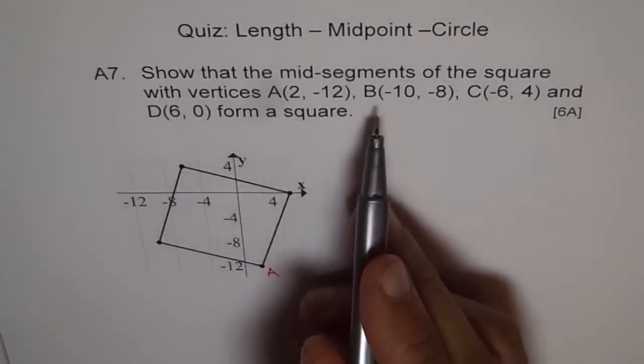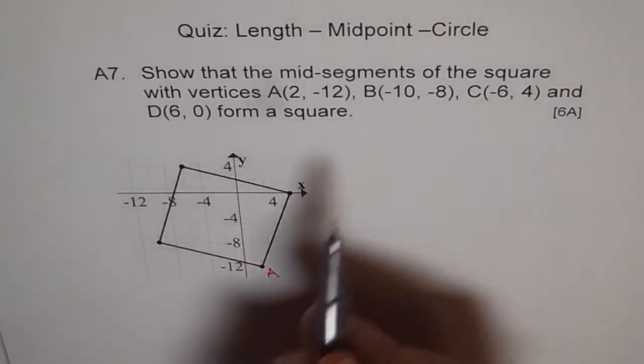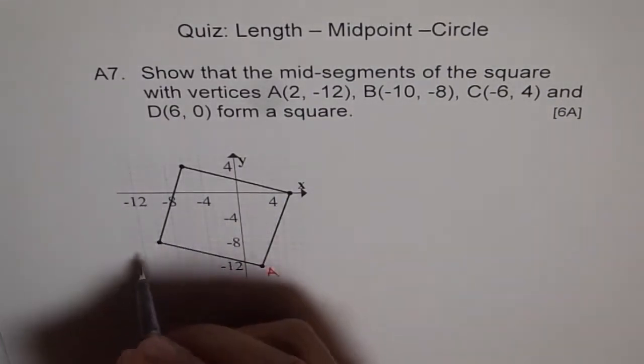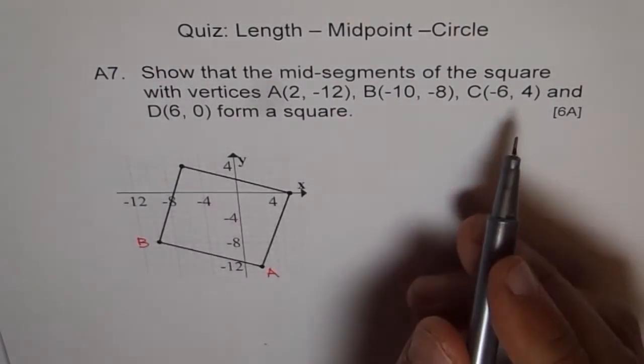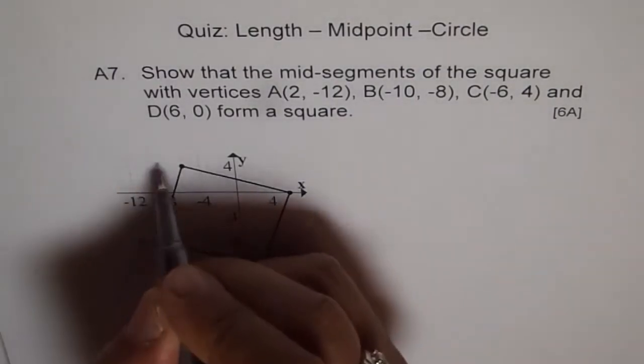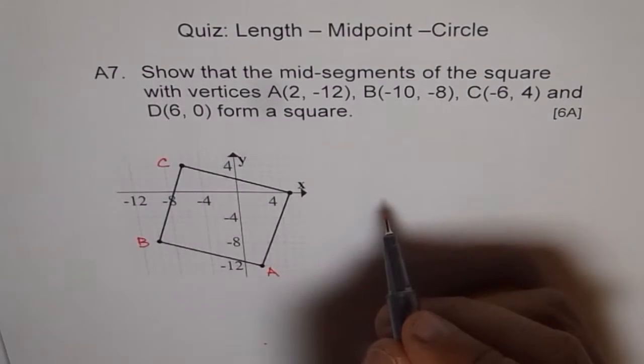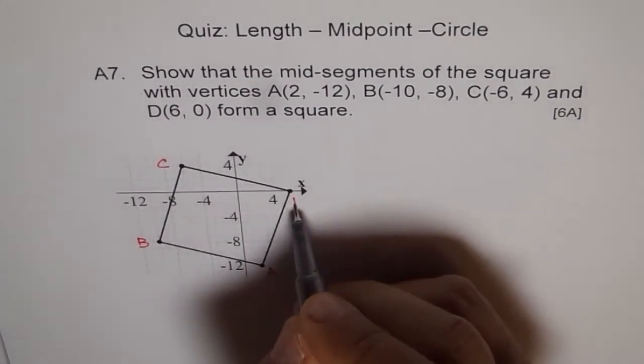B is (-10, -8), so that is B for us. C is (-6, 4), minus 6 and 4 is C, and D is (6, 0). There we have D.